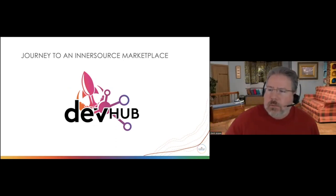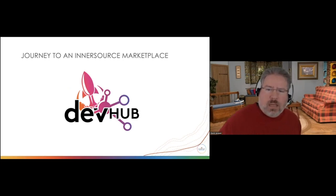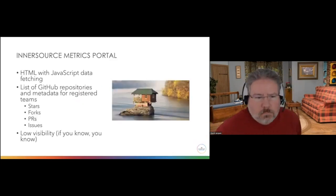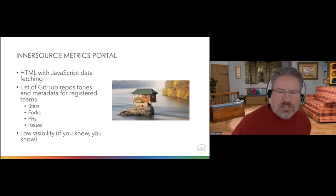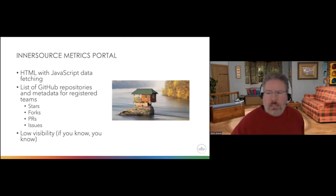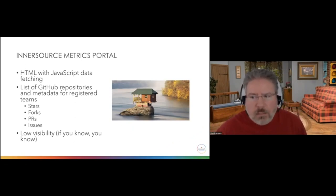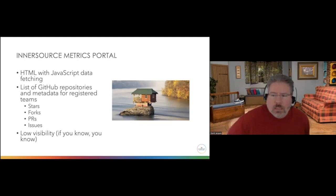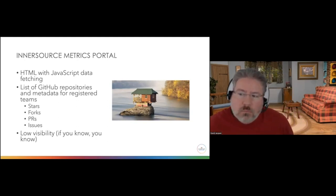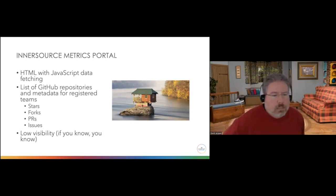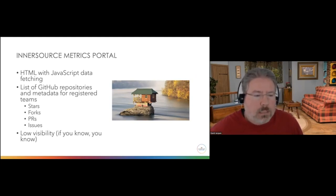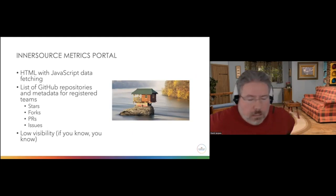Our developer experience portal is called DevHub. Going back before we go forward — this is how I view the inner source metrics portal as it existed beforehand. Gail and the open source office team were really out in front of developer experience before most anybody else at Comcast. Their portal was a good example of that. It was fairly basic — HTML with some JavaScript to pull the data. It did what it needed to do. It was really about telling people what the key metrics were on the projects inside of the inner source umbrella. But as Gail mentioned, it was kind of low visibility.